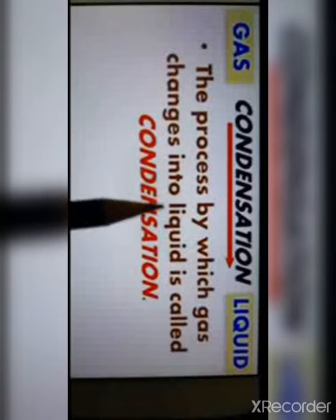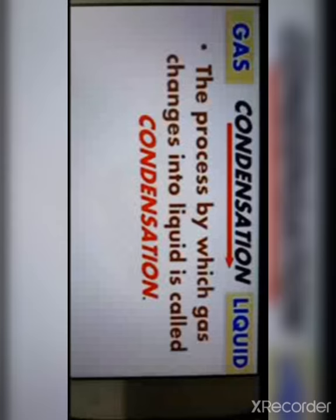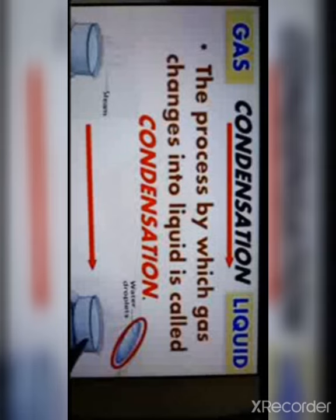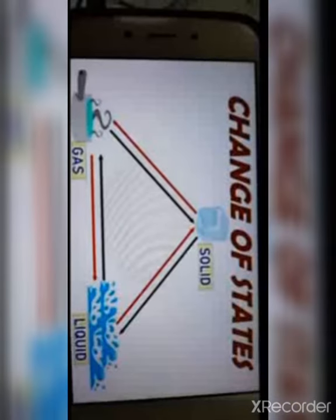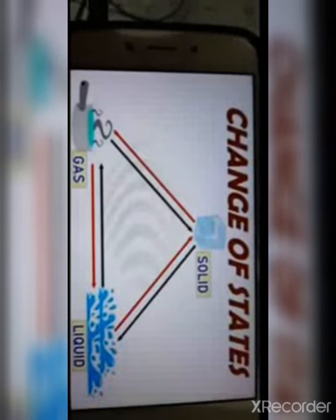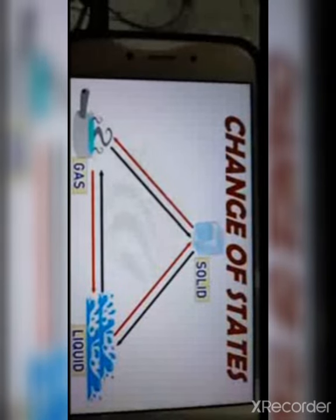Next, gas changes into liquid. The process by which gas changes into liquid is called condensation. For example, when water is boiling and you hold a cold steel plate over it, you will see droplets collecting on the plate — that is water vapor changing back into water after cooling. By these examples, we can learn the changes of states of matter. It is a reversible process: solid to liquid, liquid to gas, and gas to solid again.